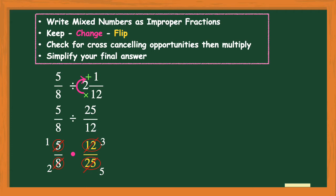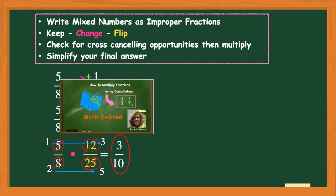Now I have much smaller numbers to multiply. Cross-canceling is really helpful when you have the opportunity. Multiply the numerators: 1 times 3 is 3. Multiply the denominators: 2 times 5 is 10. The last step is to check that the answer is in simplest form — 3 and 10 share no common factors other than 1, so 3/10 is in simplest form. For more practice with cross-canceling when multiplying fractions, check out one of my previous videos.